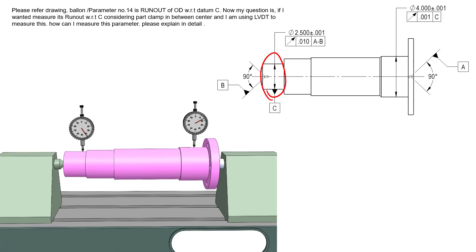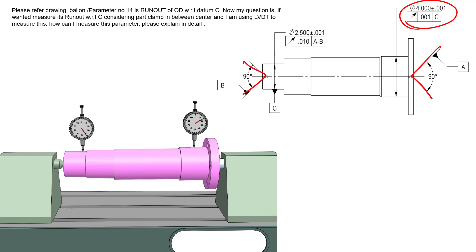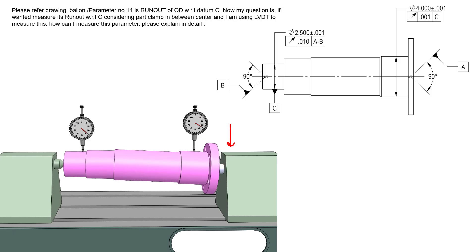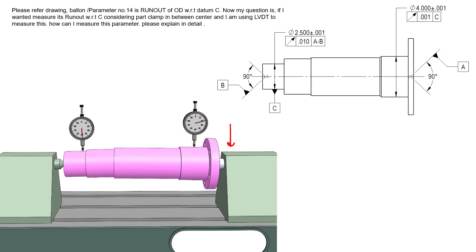To further answer the question, we're going to redefine this feature as datum feature C. When we do that, we can refer other features to this datum axis. This feature now has a runout of one thousandth with respect to datum axis C. The question is: how do I check this while still remaining between centers on A and B? This is a rather tricky question. What you might be tempted to do is move one of your centers up or down or in or out to try to zero out datum feature C — but by simply moving the pin, all you've done is adjusted where datum axis A-B is with respect to the table. That doesn't necessarily re-zero it out.